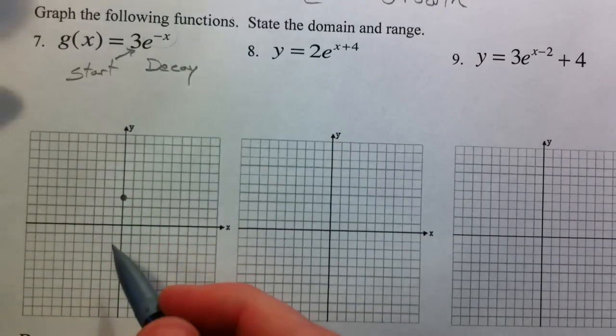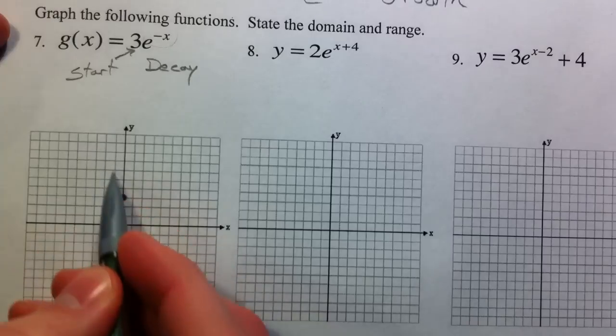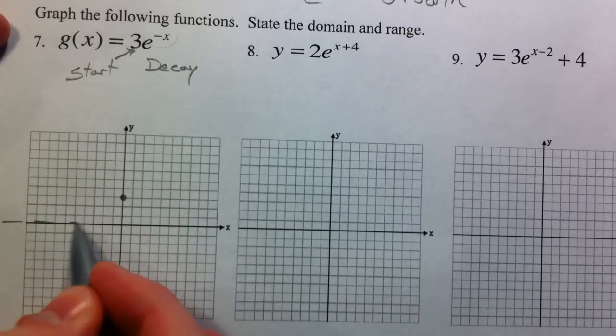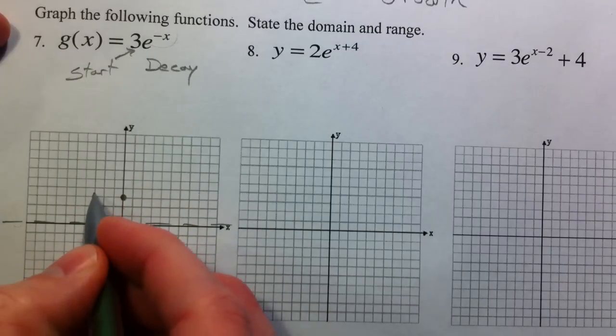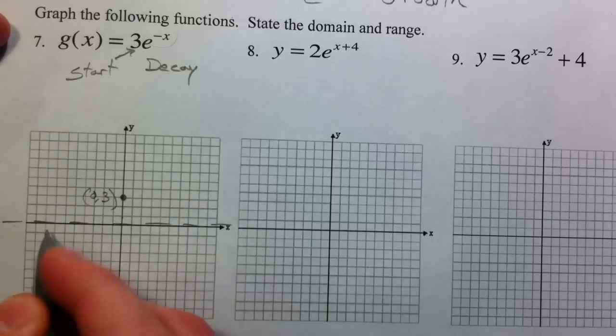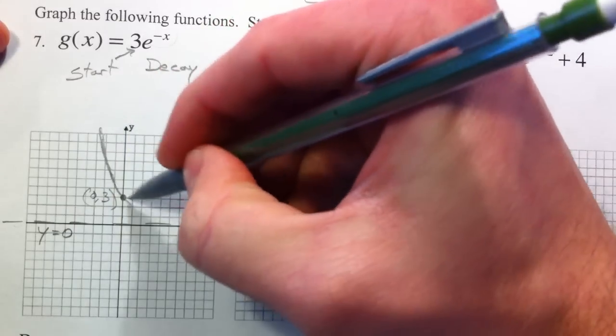Remember how all of our functions, no matter how much they decayed, would never get below 0. And so we're going to have this graph of 3 and y equals 0 as our asymptote. And then it's just going to decay.